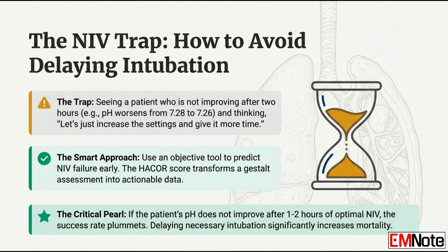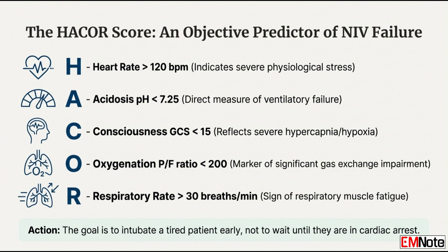Let's talk about non-invasive ventilation, or NIV. It can be a game changer, but it's not a silver bullet. We need to know when it's failing to avoid delaying intubation too long — time is everything. Procrastinating on this decision can be lethal. If the patient isn't showing objective improvement after one to two hours of optimal NIV, the success rate plummets. Waiting longer is not acceptable. We need an objective tool: the HACOR score, which has five parts.